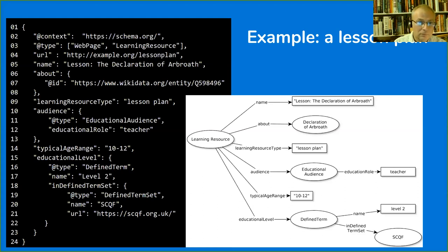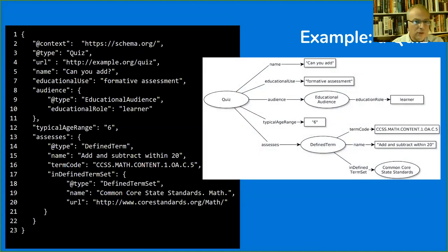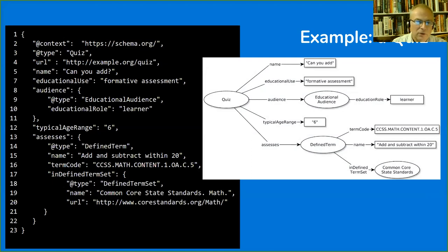A second example is a quiz. The metadata shown as a visual graph: a learning resource of type quiz called 'Can You Add?' Its educational use is for formative assessment, the audience is learners with a typical age range of six, and the educational alignment assesses a topic from the US Common Core State Standards relating to adding and subtracting numbers within 20.